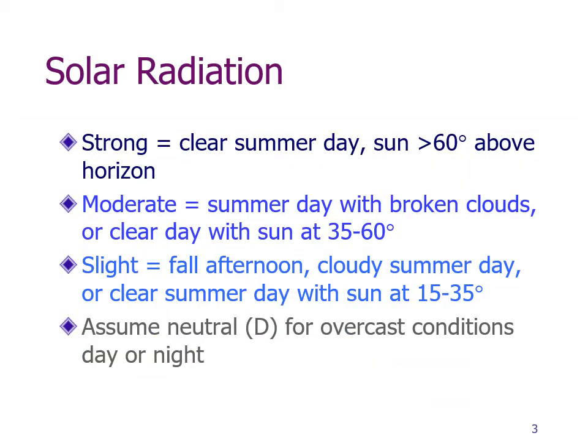The solar radiation is defined to be strong if it's a clear summer day and the sun is more than 60 degrees above the horizon. It's moderate on a summer day with broken clouds, or a clear day with the sun at a more moderate angle. It would be slight on a fall afternoon, a cloudy summer day, or a clear summer day with the sun at a low angle, like at the beginning or end of the day.